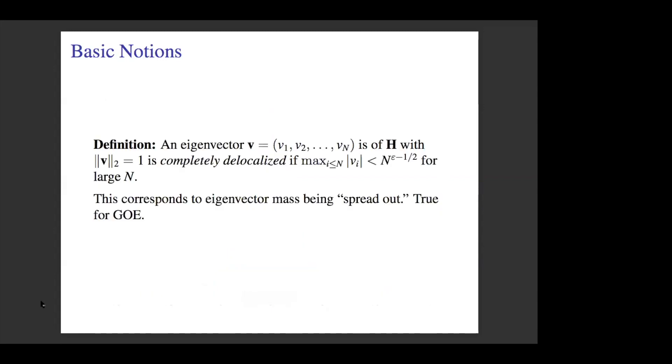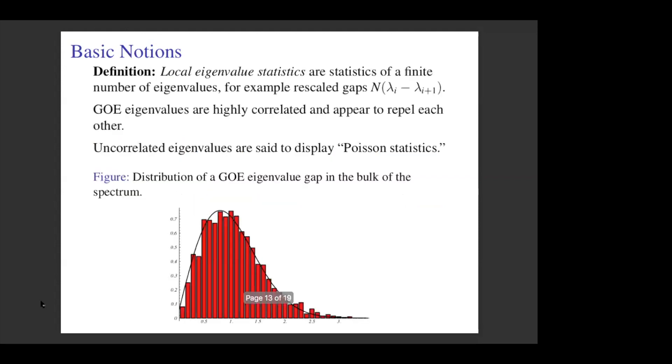To state a few predictions of this model, I first want to introduce some concepts. One is that of delocalization. We say that an eigenvector is delocalized if its mass is spread out almost equally over the coordinates. If you imagine a unit eigenvector, if the mass was spread perfectly equally, each coordinate would have mass 1 over N. This is what happens in the case of the GOE for all eigenvectors. I also want to discuss the opposite concept of localization, where the mass is concentrated on just asymptotically a few coordinates relative to N.